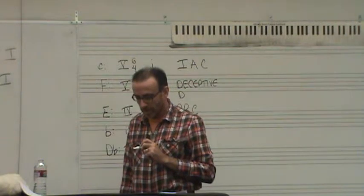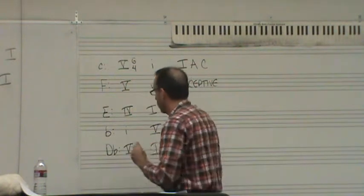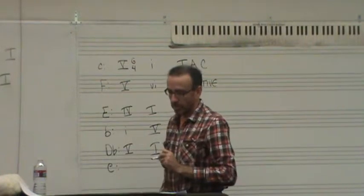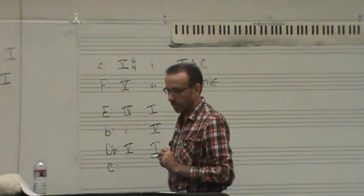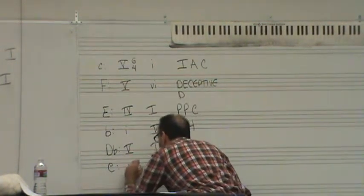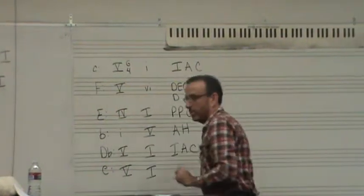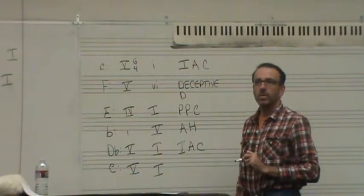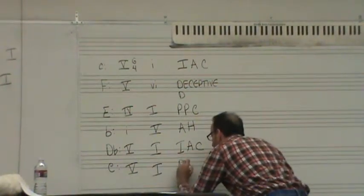And then finally, the last one is in E minor. And what's my progression there? That's 5-1. And is that perfect or imperfect? Perfect. It's perfect. So that would be a perfect authentic cadence.